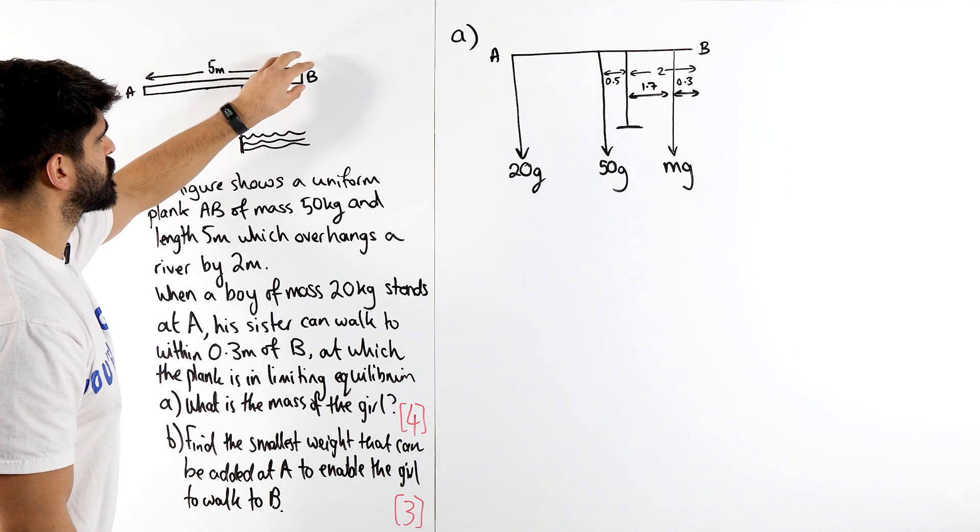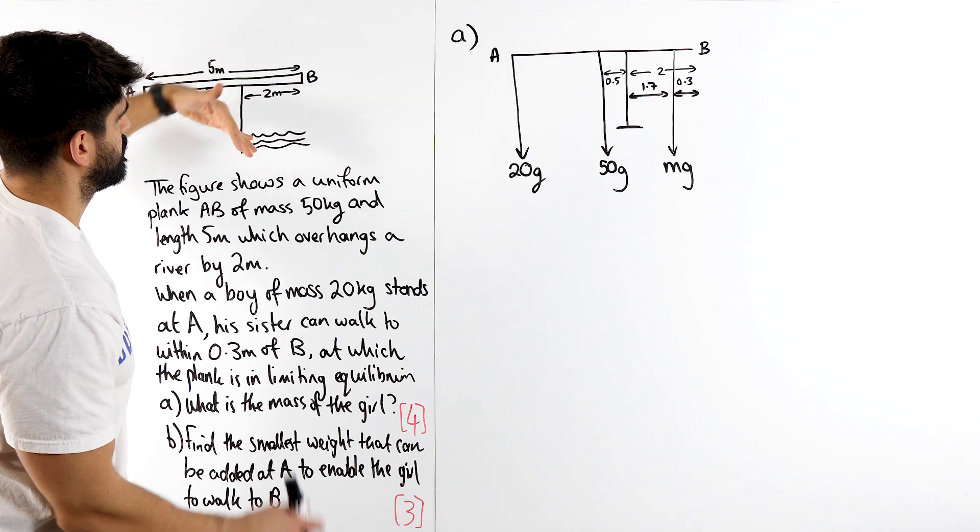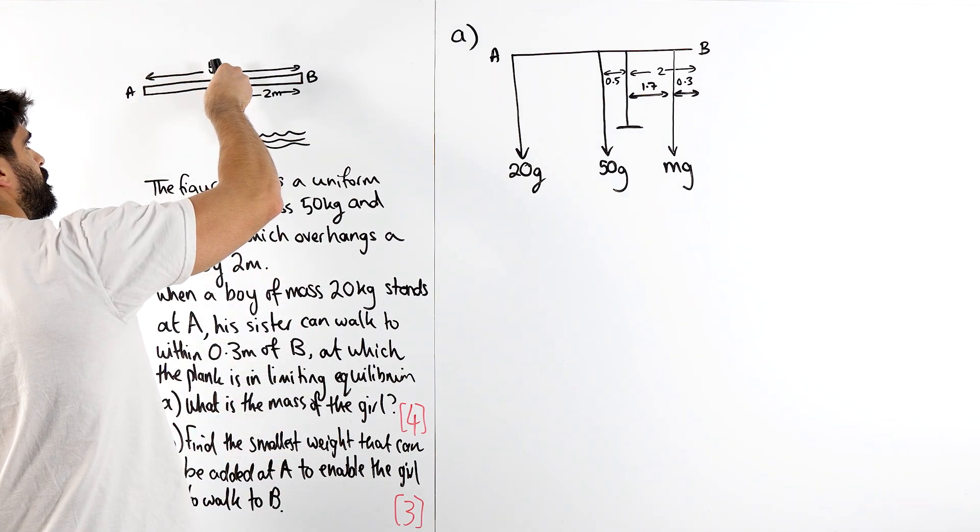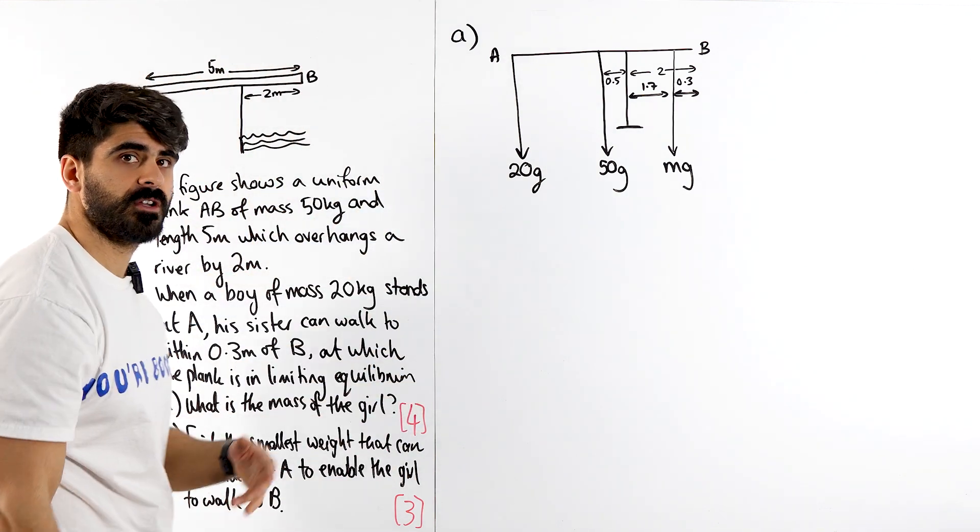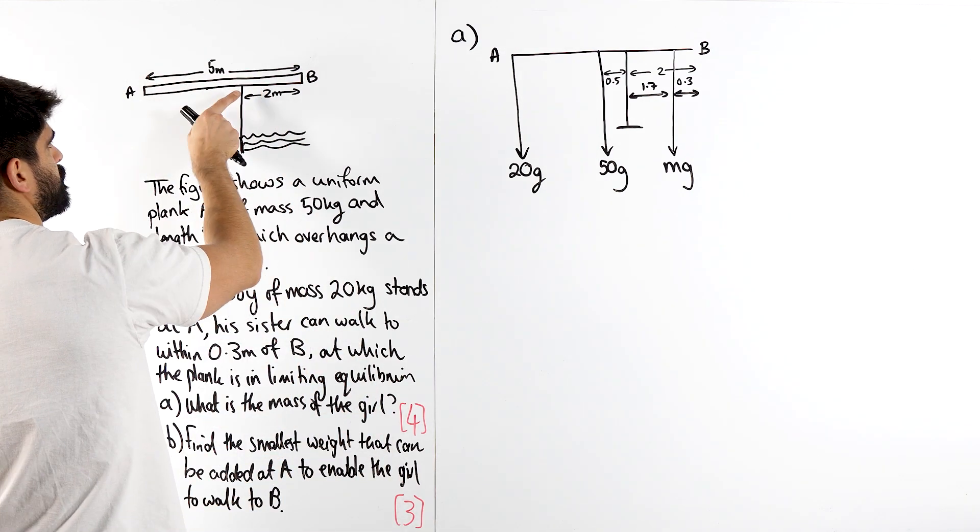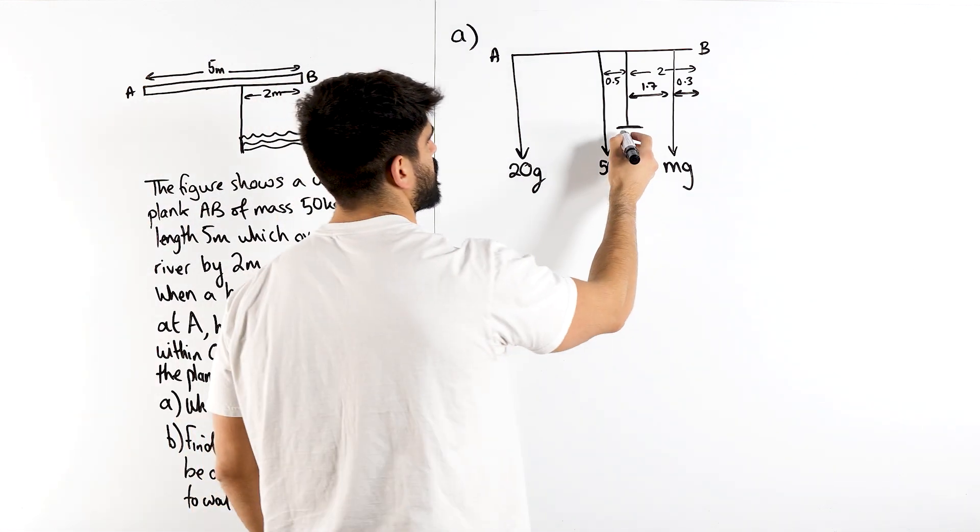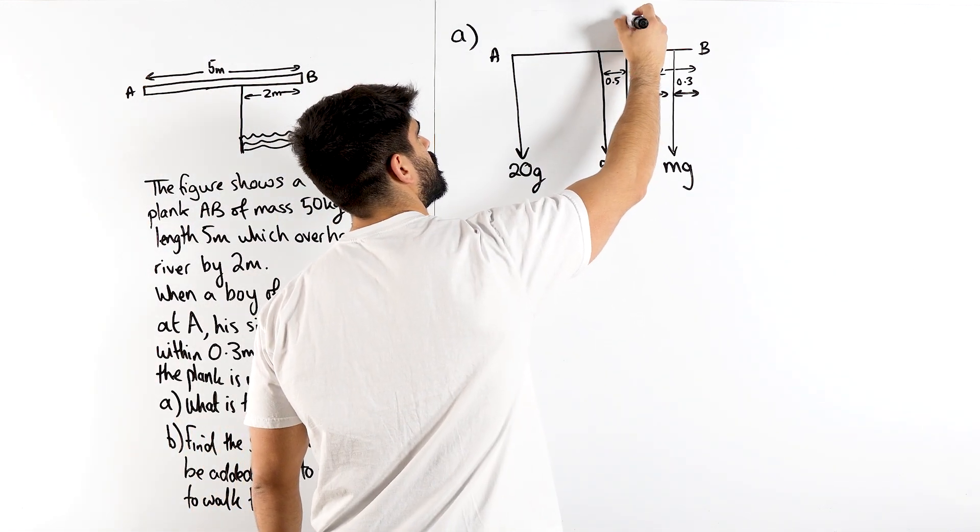Imagine the girl was super heavy. The rod would want to tilt that way, rotate this way. So the reaction force can only act in one place. We always put it in the location in which it would be tilting. It would be tilting along the ledge. So we put our reaction force here.